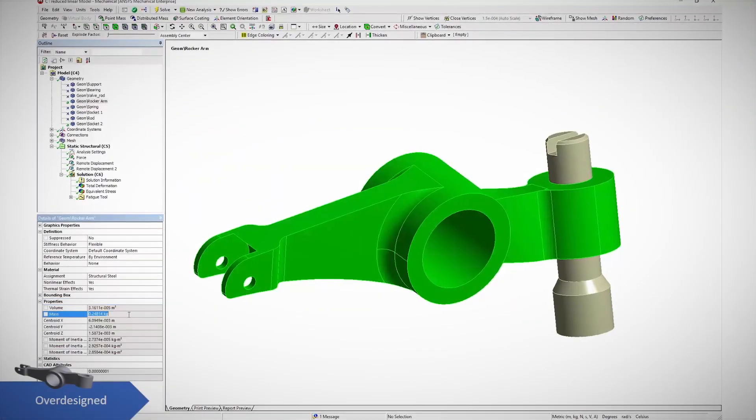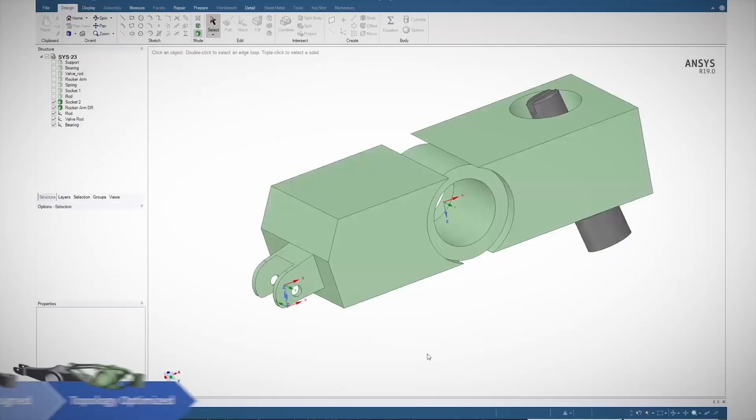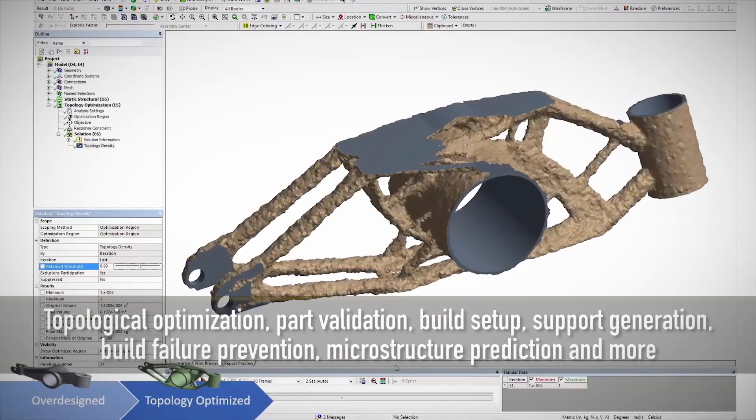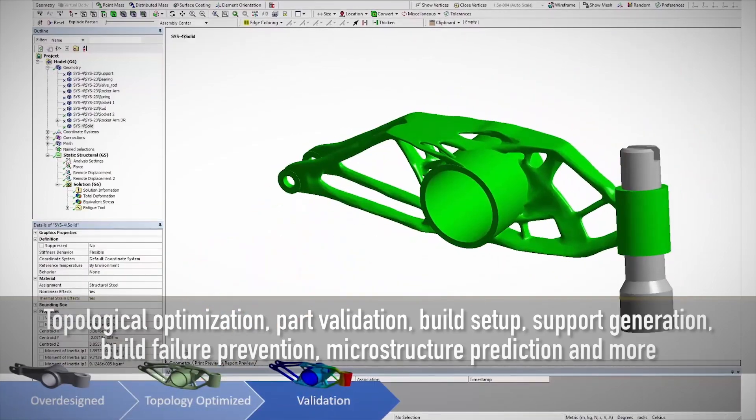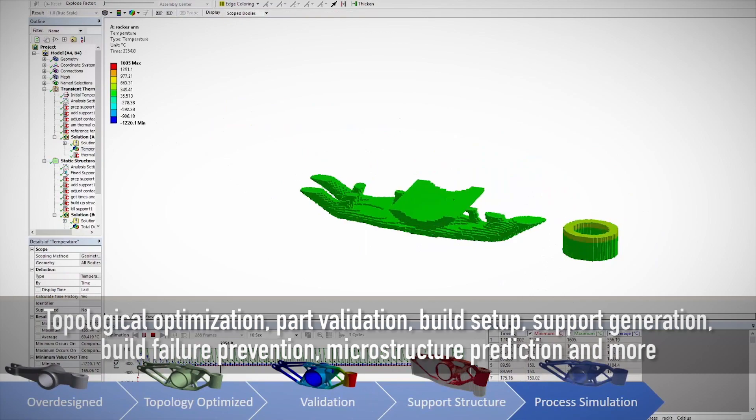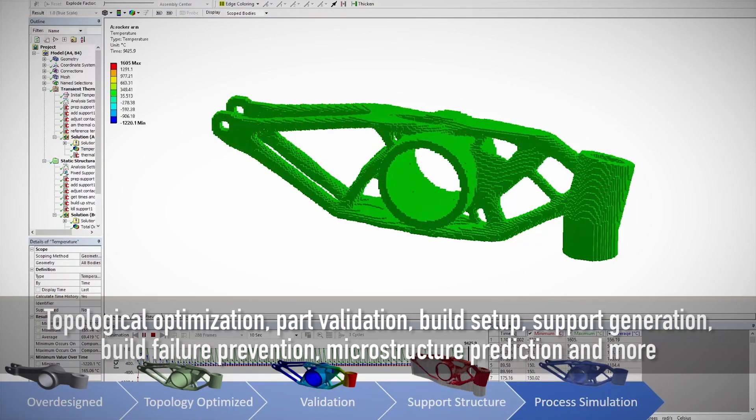These new tools help customers work through the entire additive manufacturing process chain, including topological optimization, part validation, build setup, support generation, build failure prevention, microstructure prediction, and more.